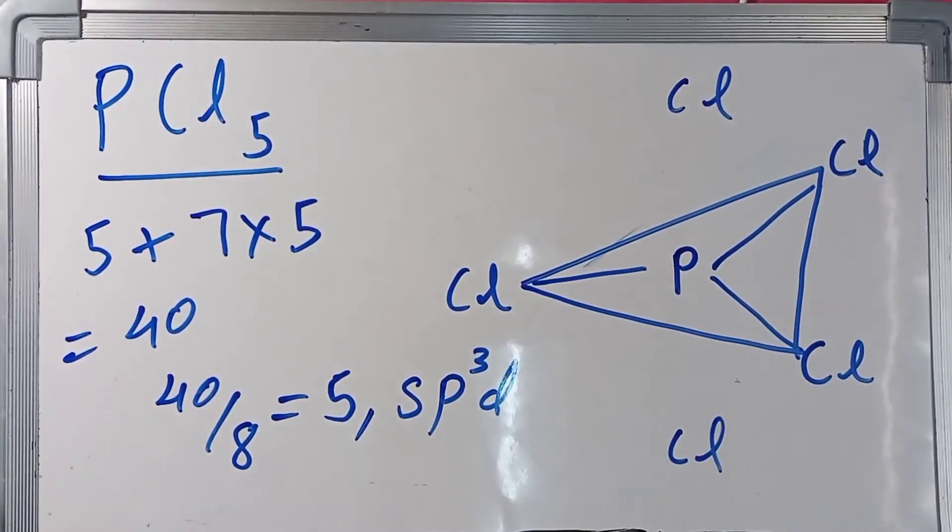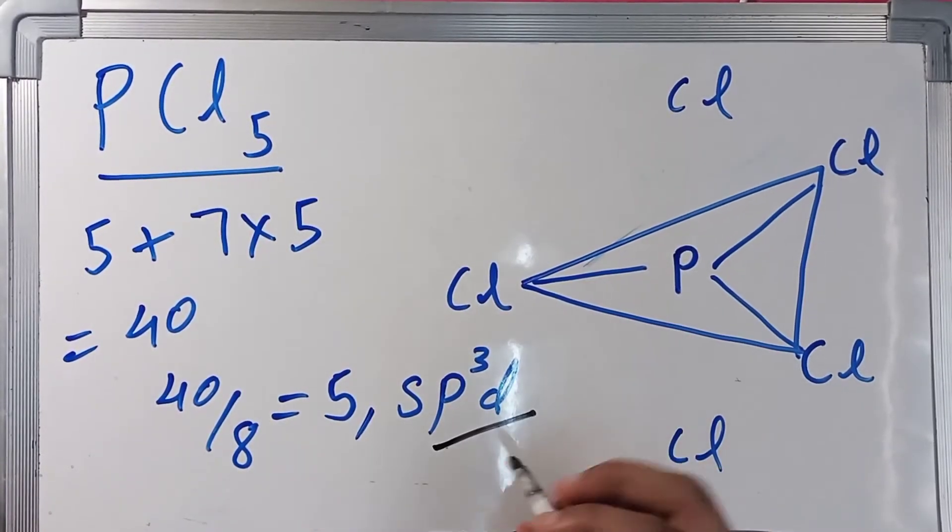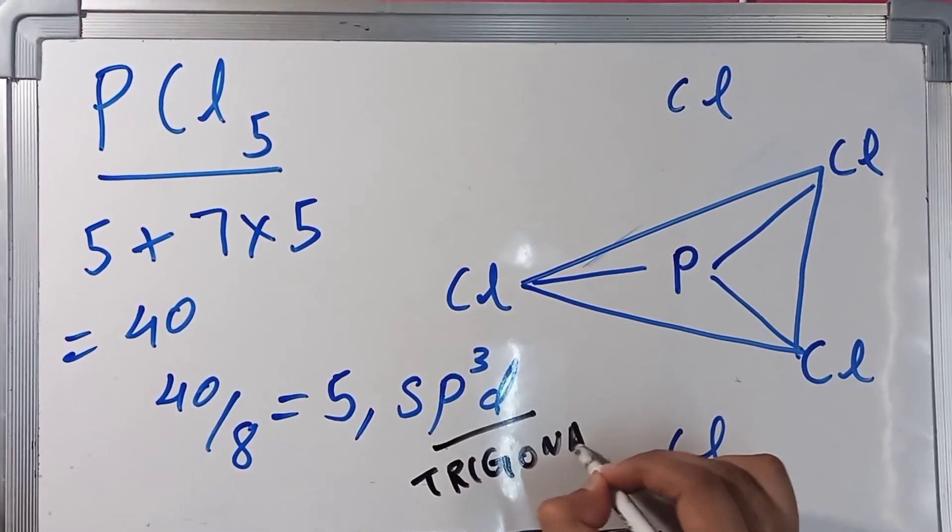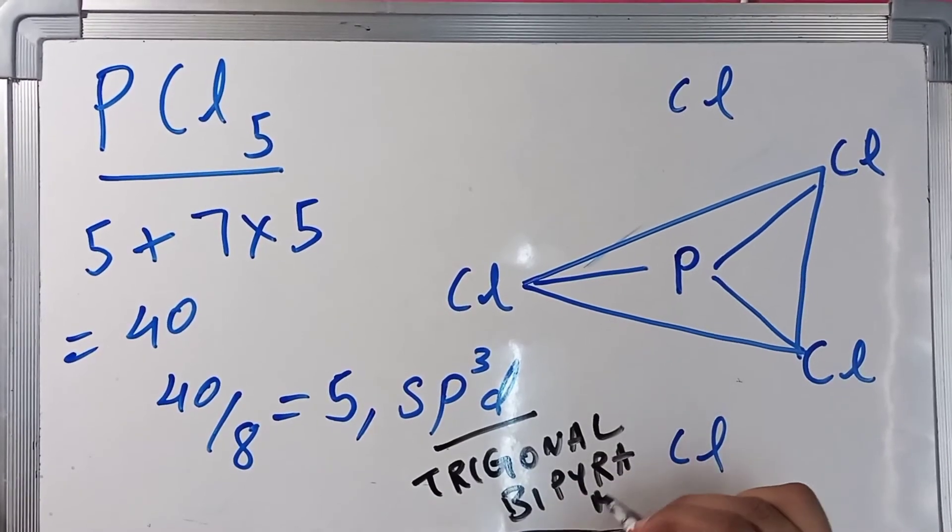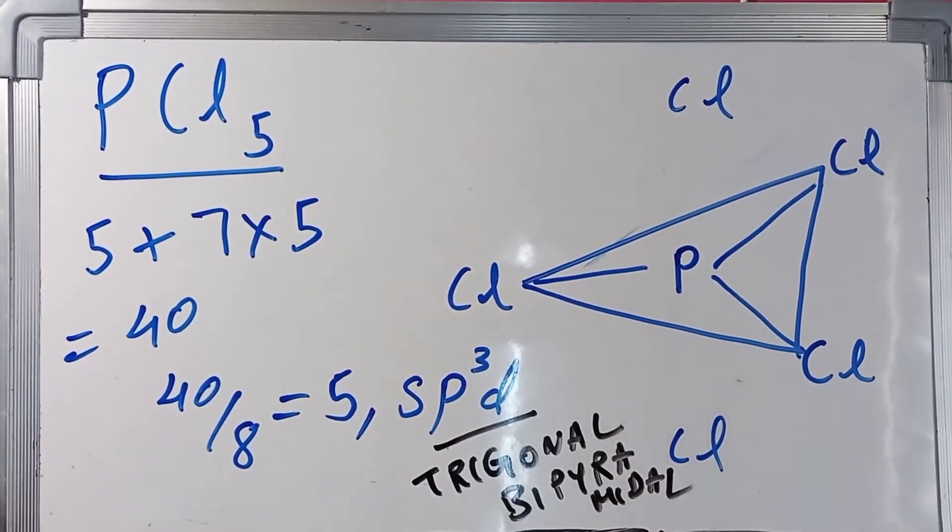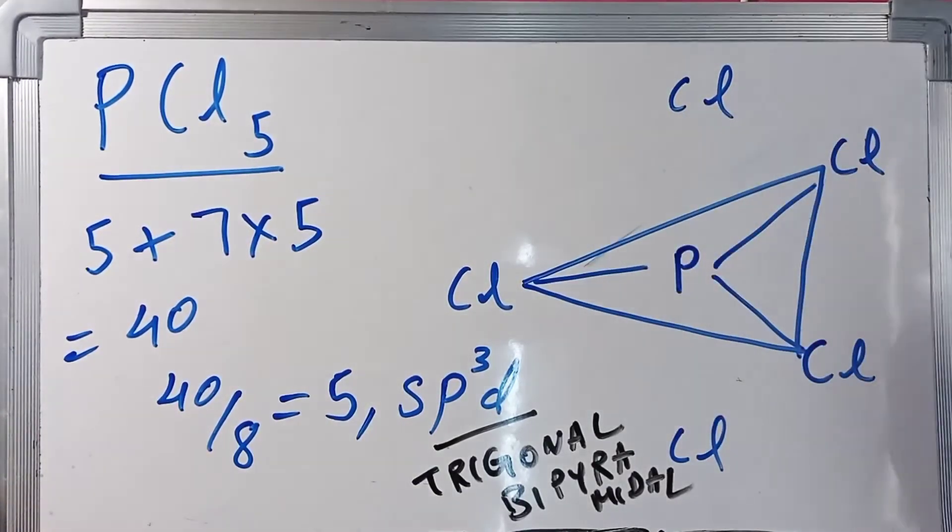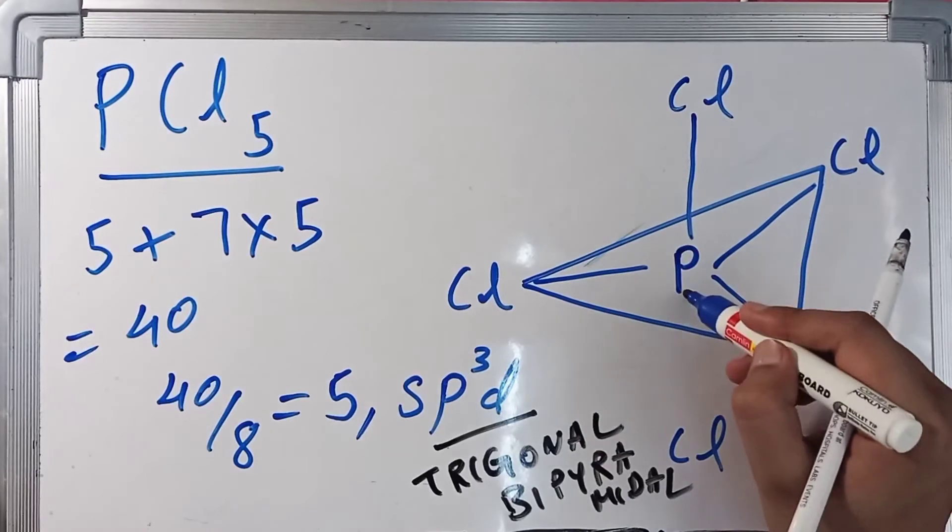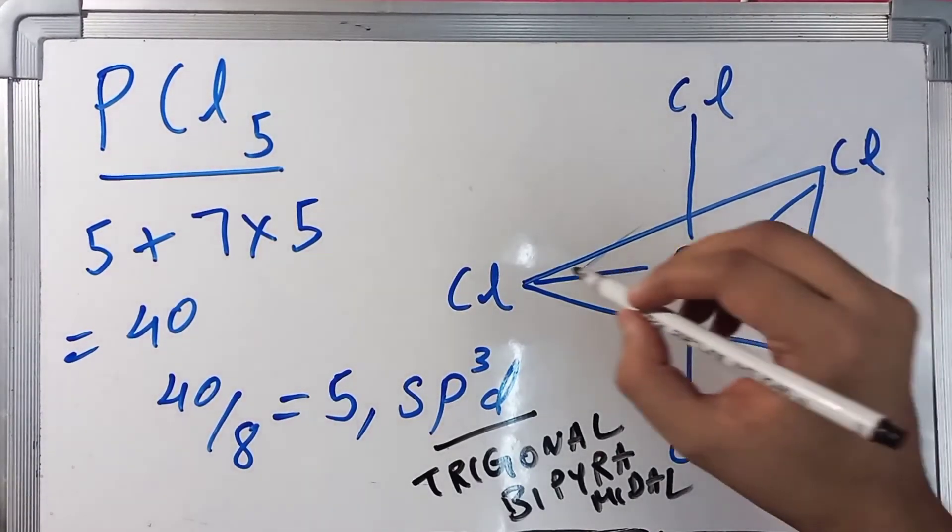If we got sp3d hybridization, that means it is trigonal bipyramidal. It is connected like this. Now where are the pyramids? Let me draw it.